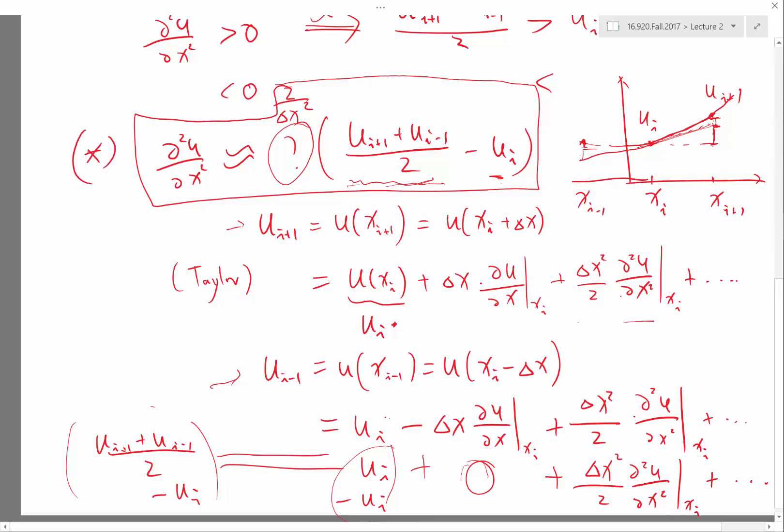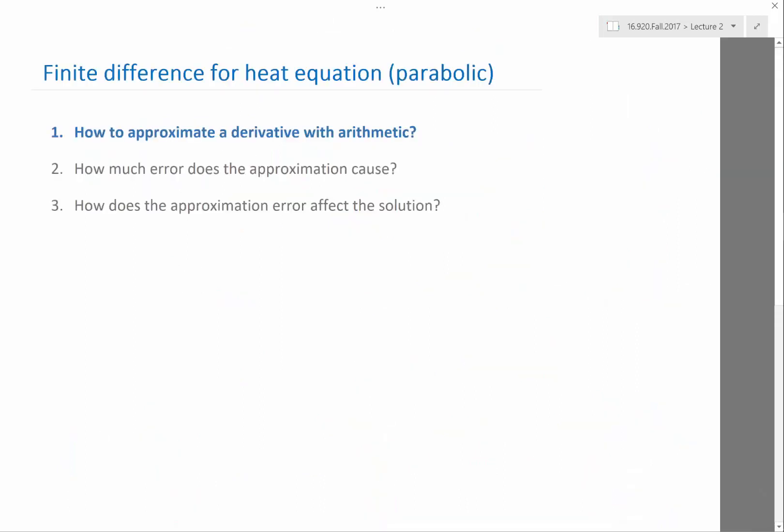This is the first finite difference formula we have derived. Let's just write it down in a nicer way. Let's just cancel this 2 with the 2 over here and put this 2 over here. We'll write it down as second order derivative is approximately equal to u_i+1 plus u_i-1 minus 2 times u_i divided by delta x squared. This is basically written in a slightly better way.